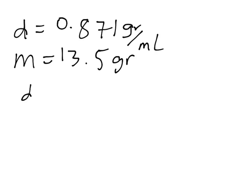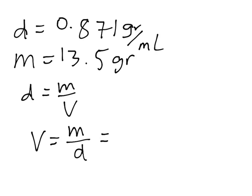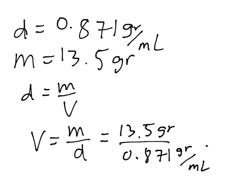So what you do is you write the formula, you solve for V, and you simply plug in the values. It will be 13.5 grams over 0.871 grams per milliliter. And with a calculator, you can just get the value. So the grams go, and you will have 15.49 milliliters.